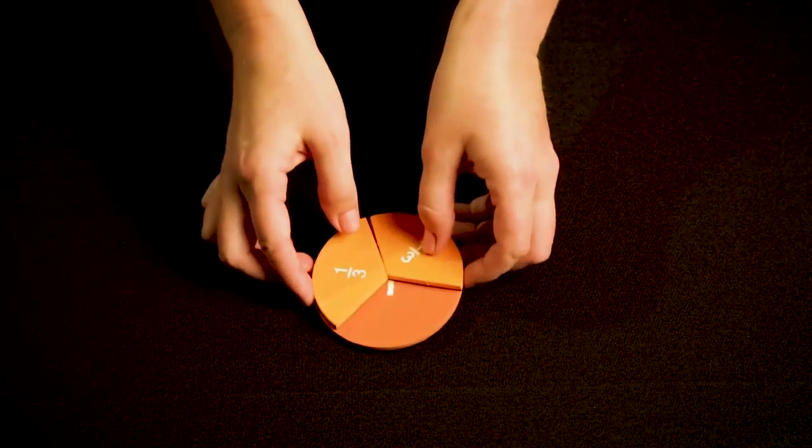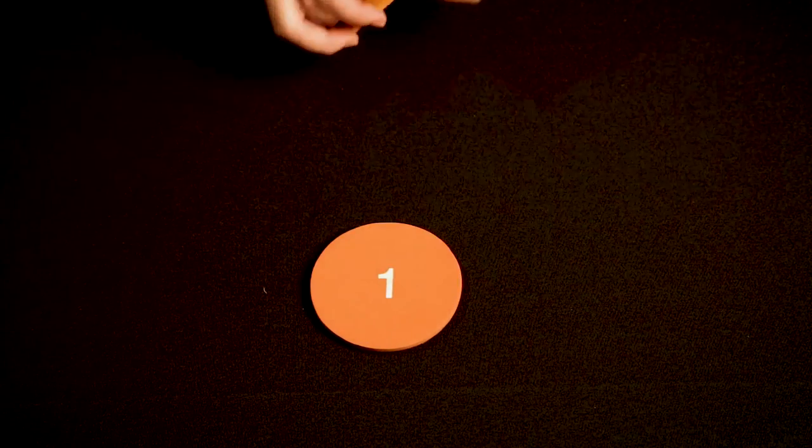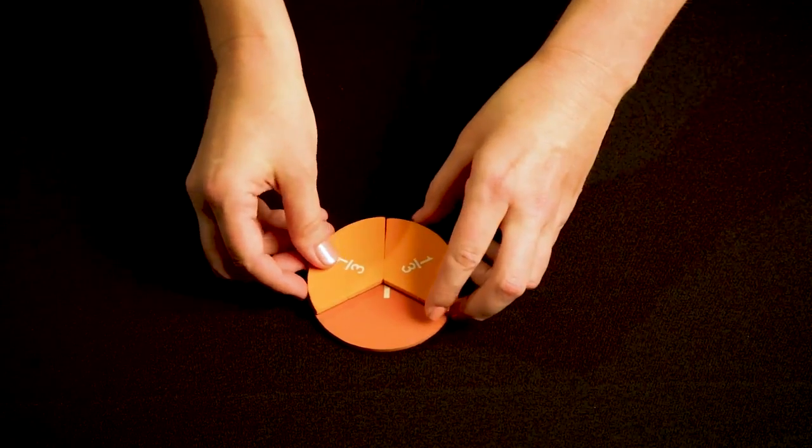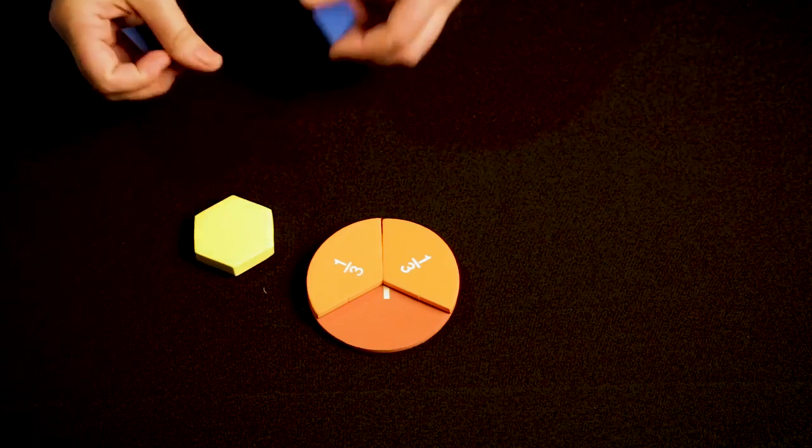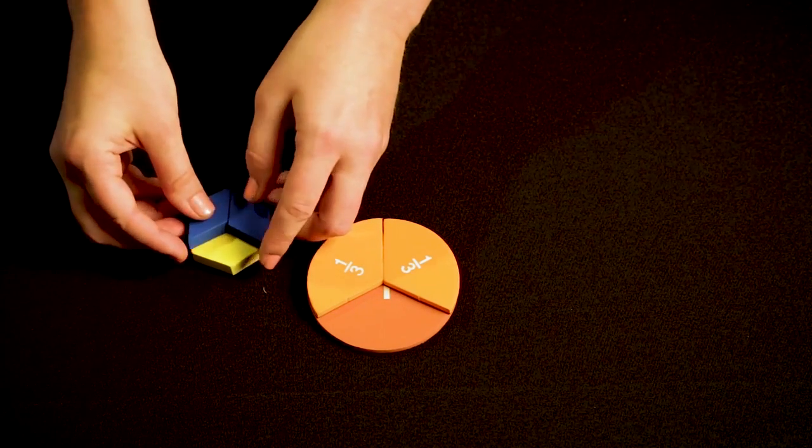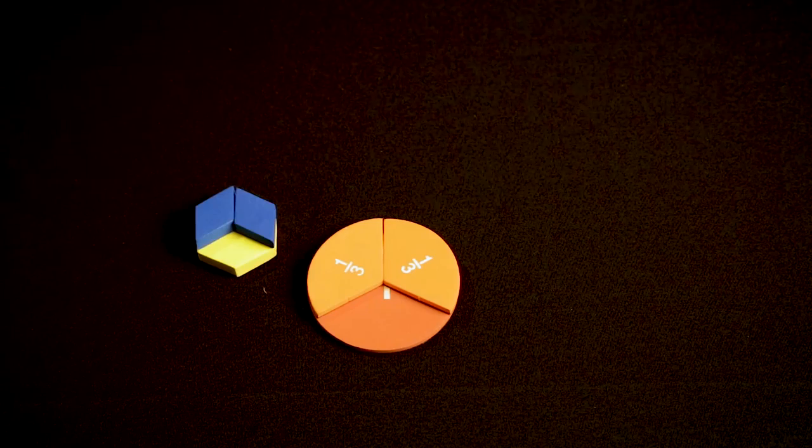We also need to show fractions using the area model. The area model of fractions is any area that can be divided into equal parts. For example, here is the fraction two-thirds. I could also use these pattern blocks. Here is a hexagon and on that hexagon I can show the area of two-thirds.